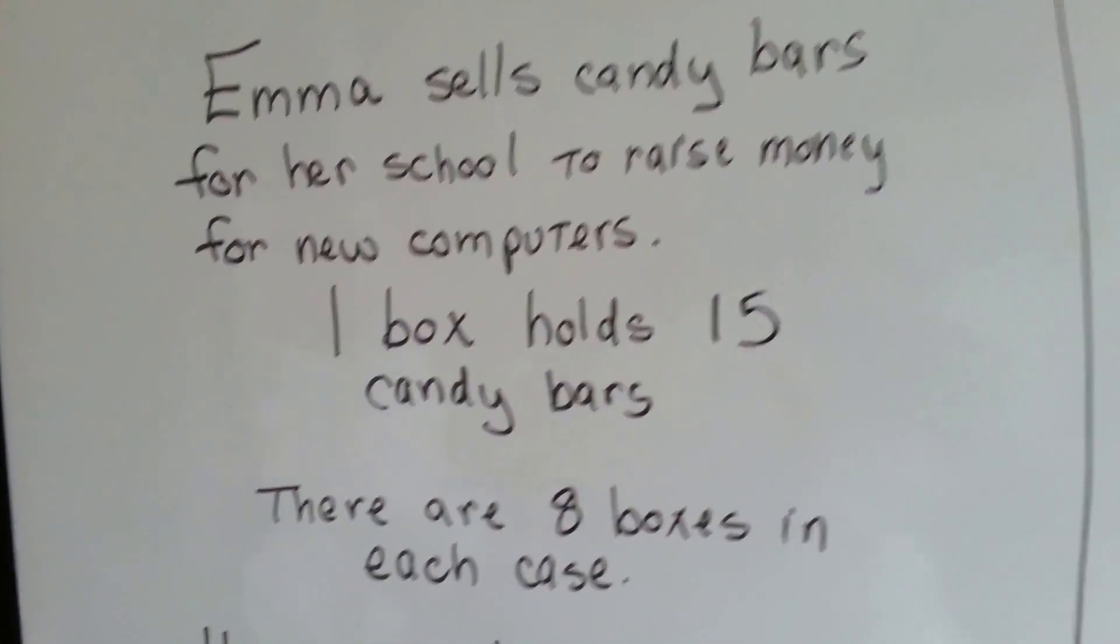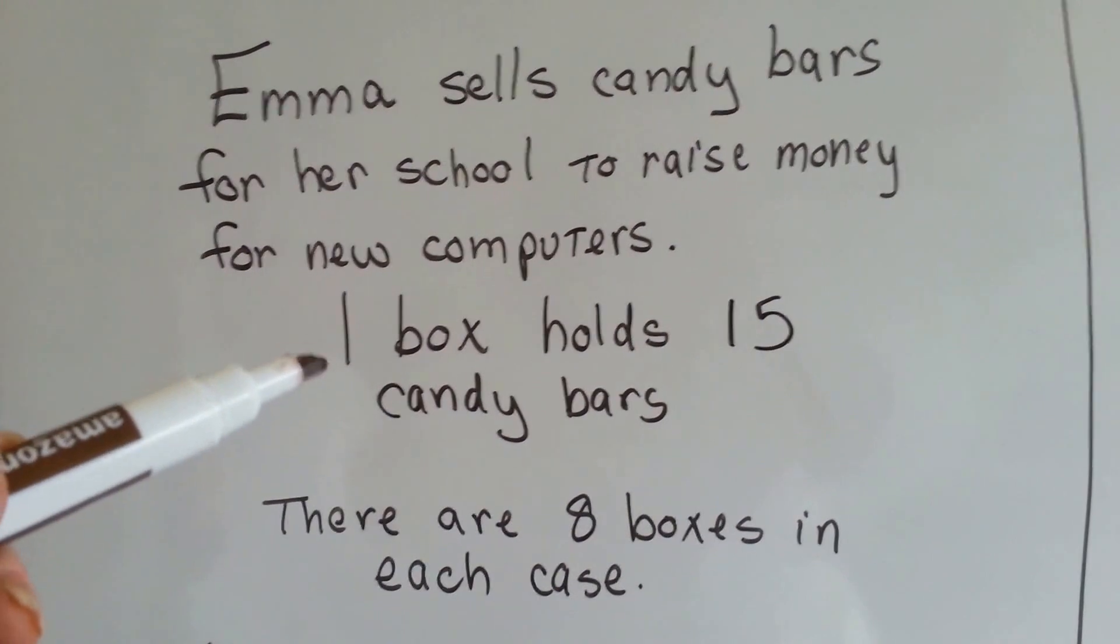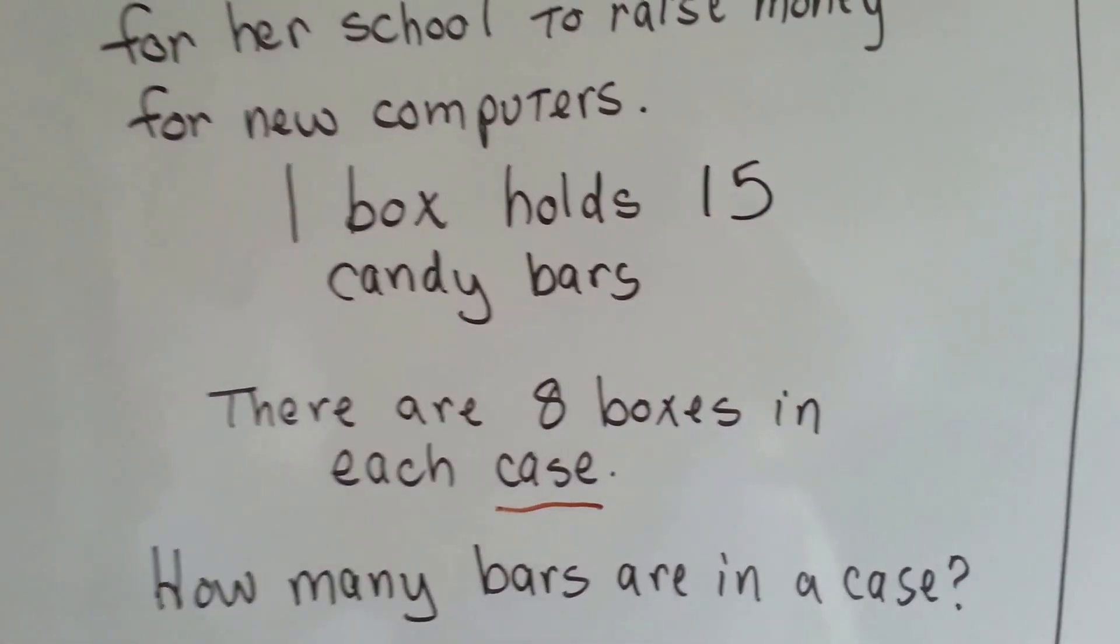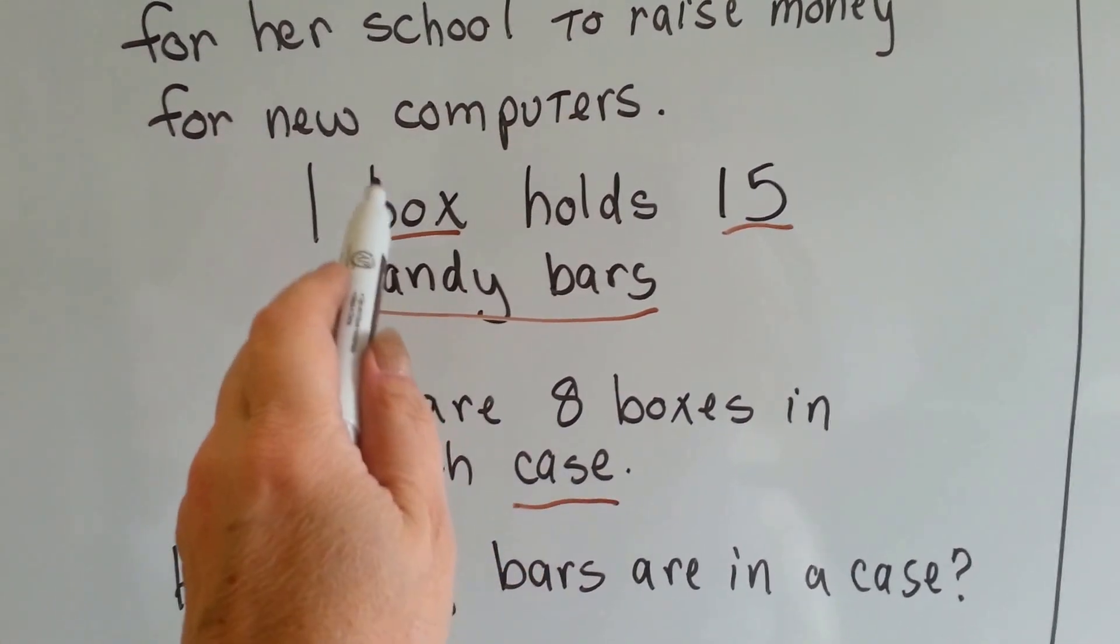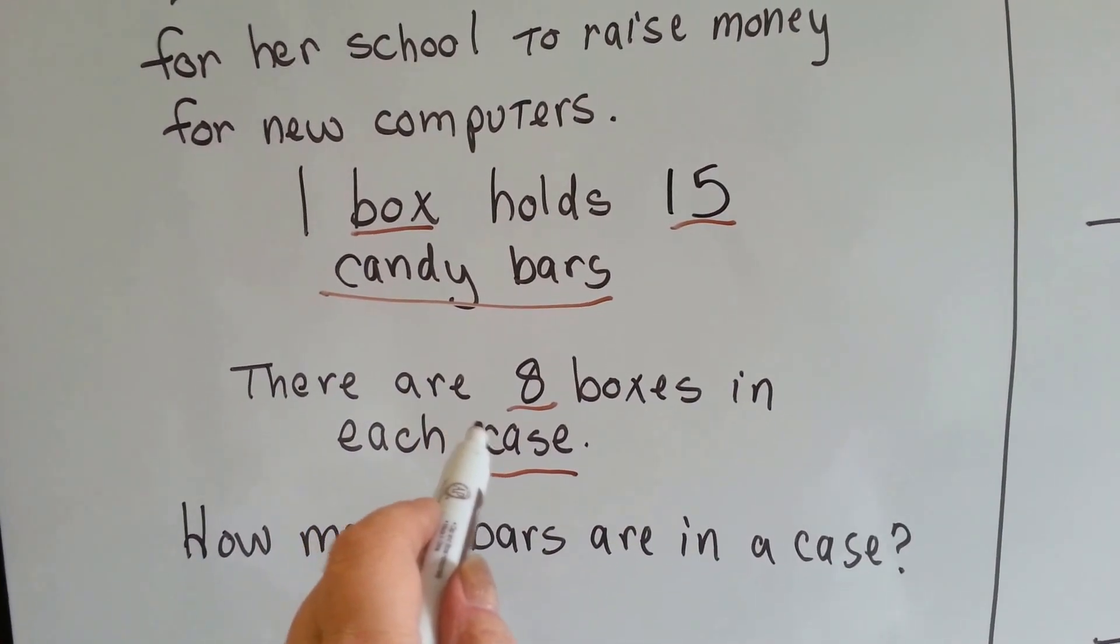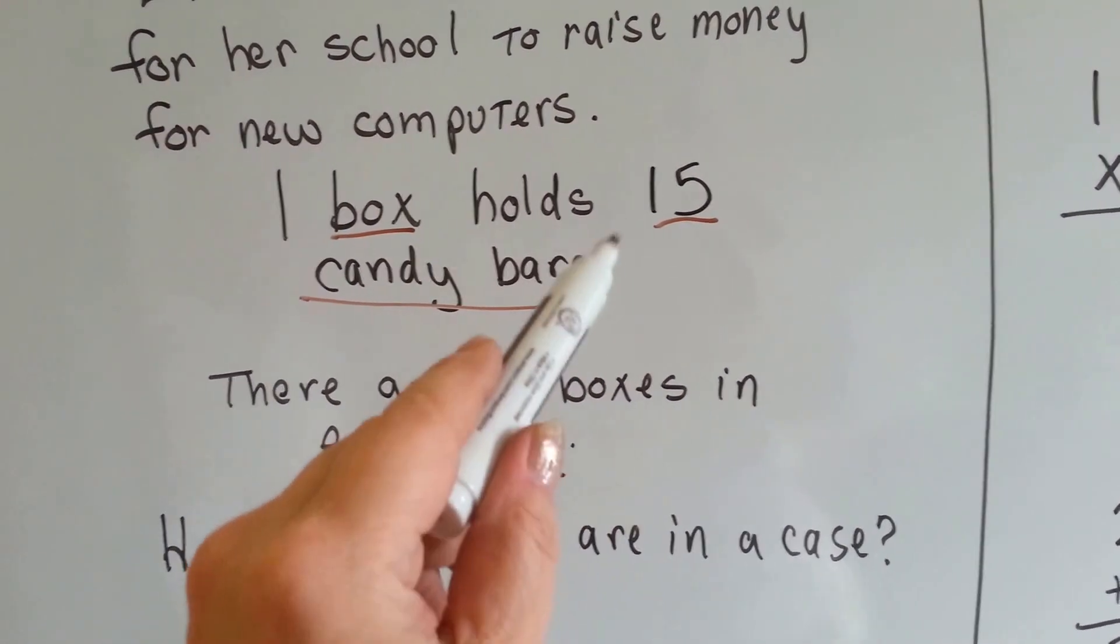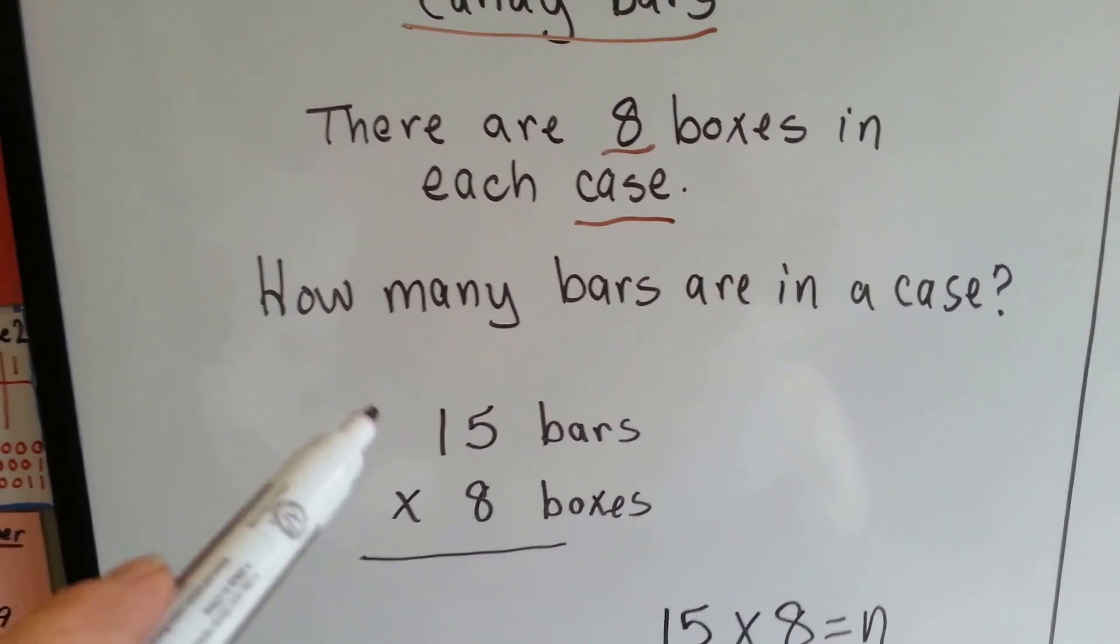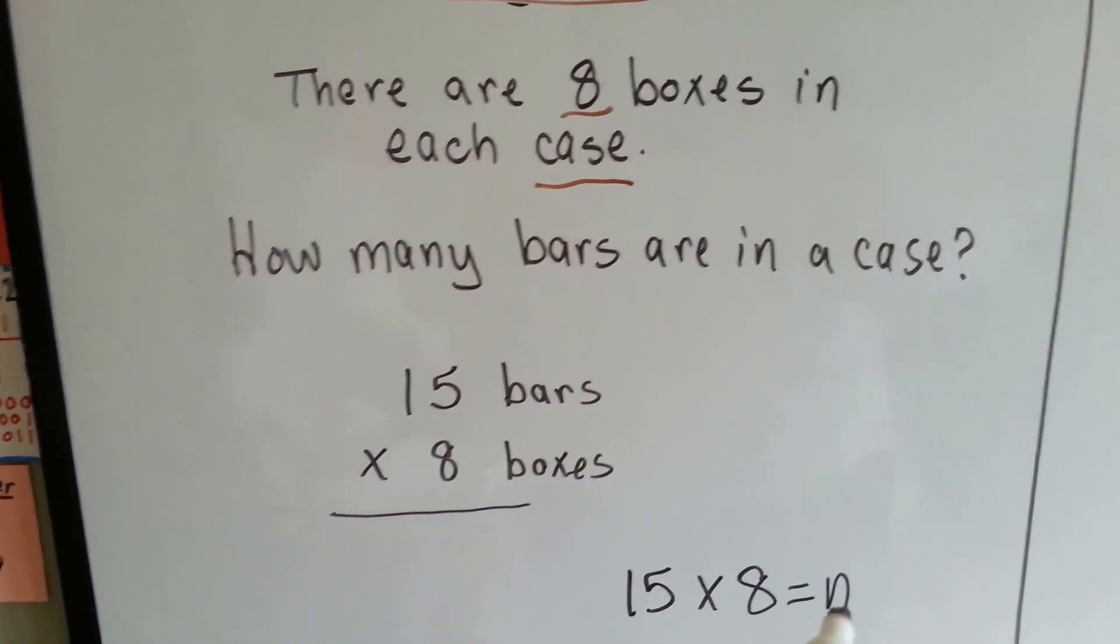So here we go. Emma sells candy bars for her school to raise money for new computers. One box holds 15 candy bars. There are 8 boxes in each case. How many bars are in a case? If there's 15 in a box and there's 8 boxes in a case, we need to do 15 eight times. So 15 bars times the 8 boxes is 15 times 8 equals n, equals the number of candy bars in the case.